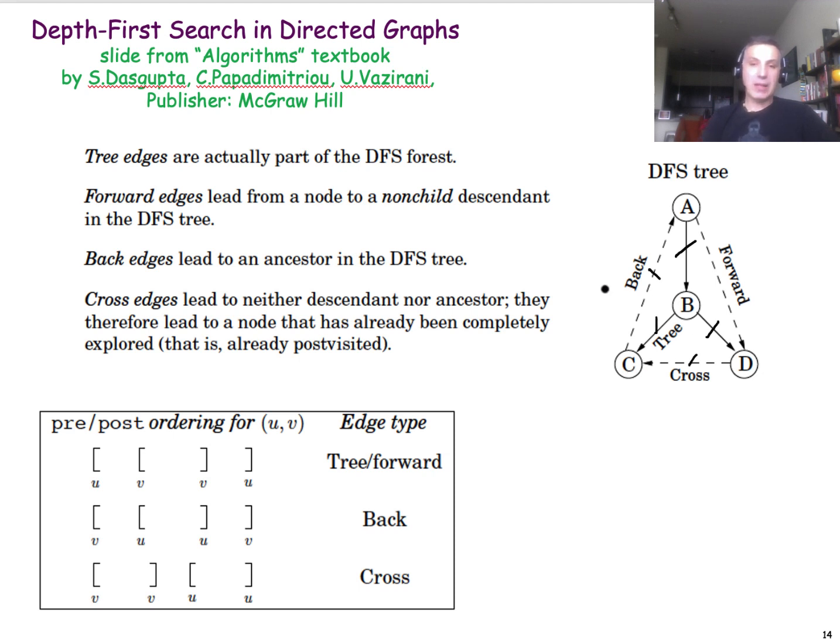So we can classify the edges of a directed graph using the pre- and post-numbers as follows. Suppose that you have an edge from a node U to a node V, and you have the pre- and post-numbers for both U and for V. If the pre- and post-interval of V is completely contained in the pre- and post-interval of U, then the edge from U to V is either a forward edge or a DFS tree edge.